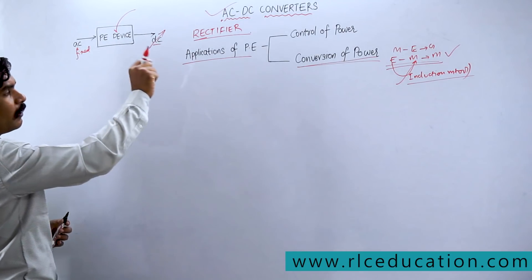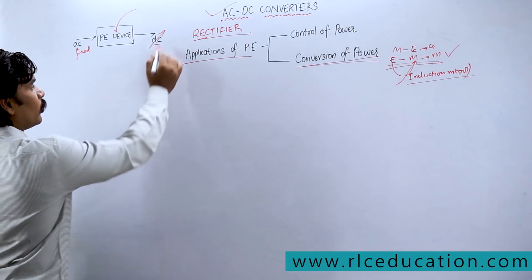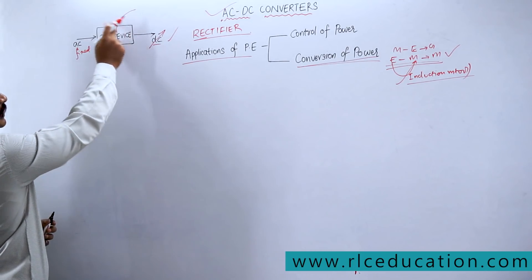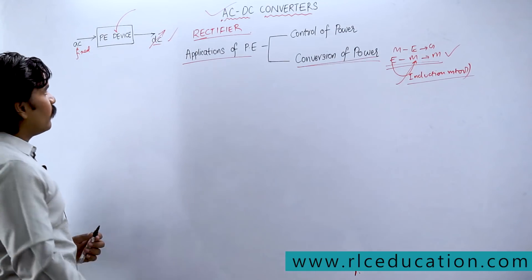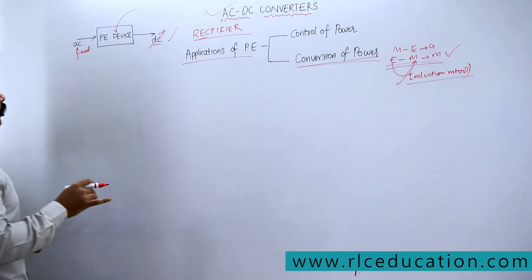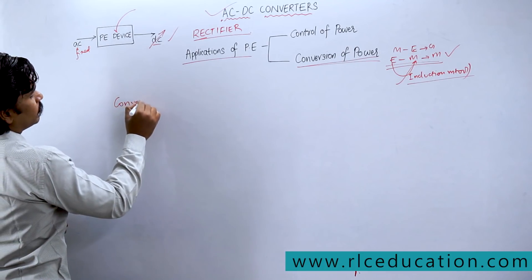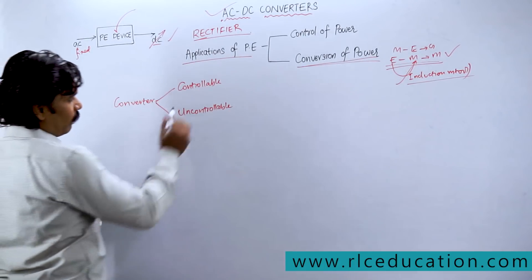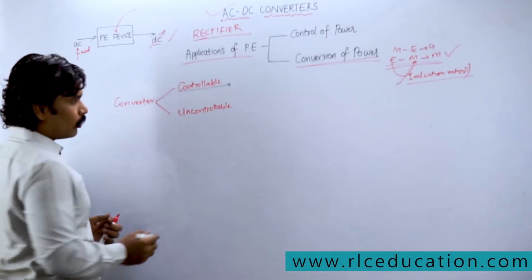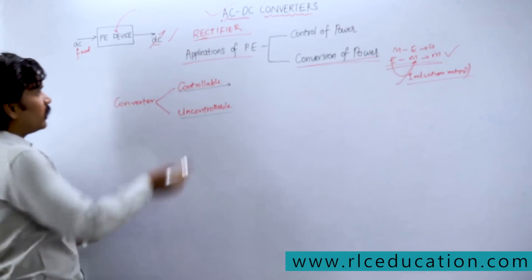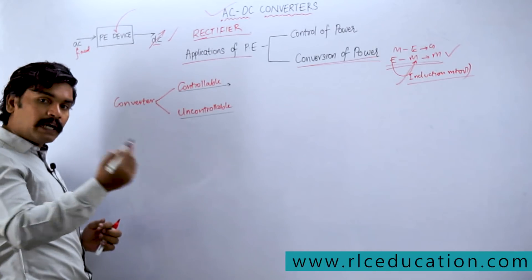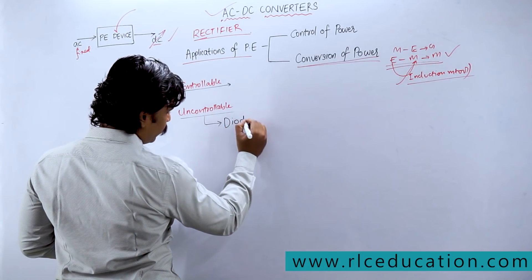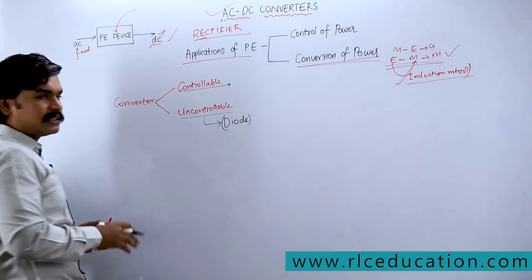A rectifier converts a fixed AC input into a variable DC output — that is one of the main characteristics of AC-DC converters. Since you have control on the output, the power electronic switches used must be controllable. A converter may be controllable or uncontrollable. If you are using a controllable switch it is a controllable converter; if using an uncontrollable switch it is uncontrollable. The only uncontrollable switch is the diode.